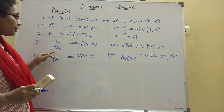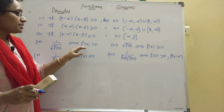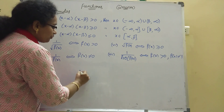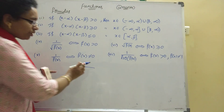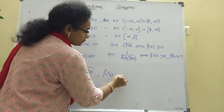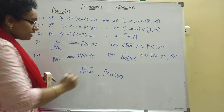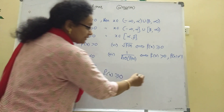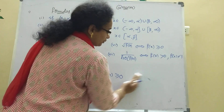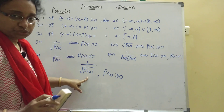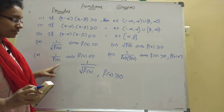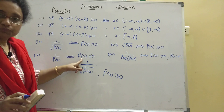Next, if the function is 1/√f(x), the first step is to write f(x) > 0. Why? Because the square root value is always positive, and since 1/0 is not defined, we don't want the denominator to be zero. So when 1/√f(x) is given, the condition is f(x) > 0 (strictly greater than zero, not equal to zero).